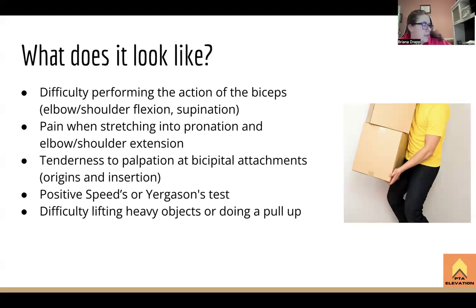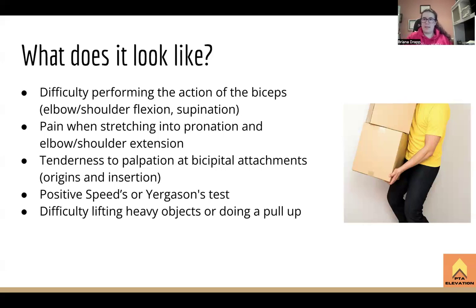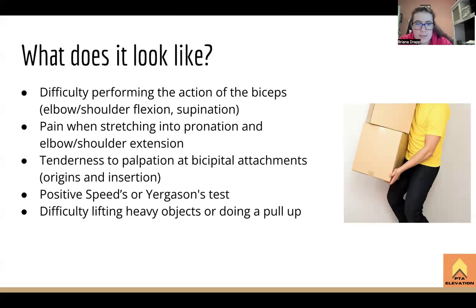Two special tests are used: Speed's test and Yergason's test. For Speed's test, the patient supinates their arm, holds it at 90 degrees of shoulder flexion, and performs a manual muscle test — essentially a flexion MMT with the palm facing the ceiling. For Yergason's test, the elbow is at 90 degrees of flexion, the arm is slightly externally rotated and supinated, and downward pressure is applied as the patient moves into shoulder flexion. Both tests involve a supinated, flexed position; the key difference is elbow position. A positive result on either confirms biceps involvement.